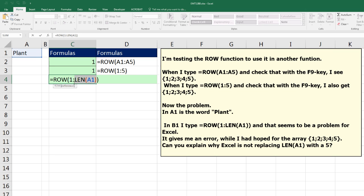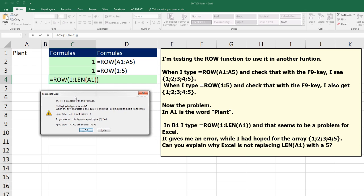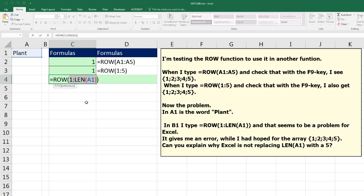And if I put a colon and a 1, if I highlight this and hit F9, whoa, why isn't it working? This formula should work. This is trying to create that row reference 1, colon, 5. But Excel cannot understand it.